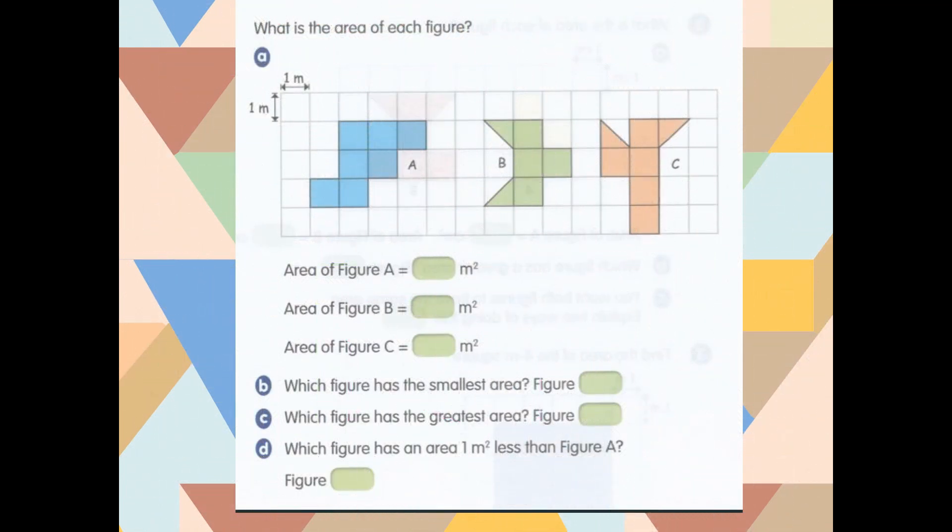What is the area of each figure? First, count the full squares first. Figure A has 1, 2, 3, 4, 5, 6, 7. Figure A has 7 square meters.